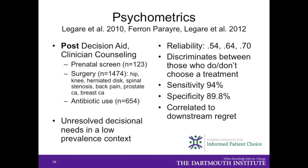There is some psychometric data on the SURE items. This has been done in three different areas. Audrey Ferron-Parey just helped with the recent evaluation. Reliability ranges from .54 to .7. It discriminates between those who do or don't choose a treatment. Audrey has demonstrated sensitivity and specificity that are reasonable. Intriguingly, it's also correlated to downstream regret, which was mentioned earlier. The psychometrics of the short version are starting to show promise as a clinical tool.